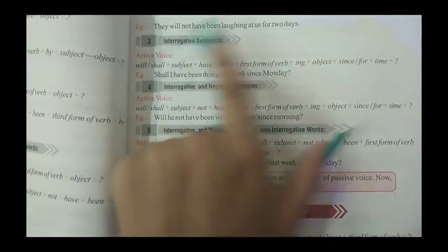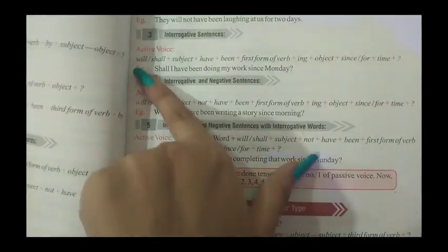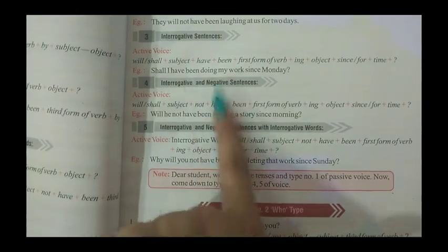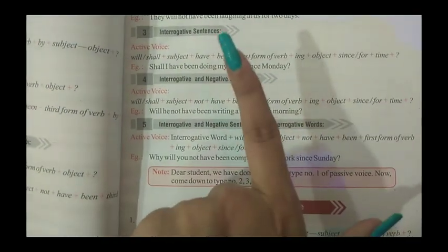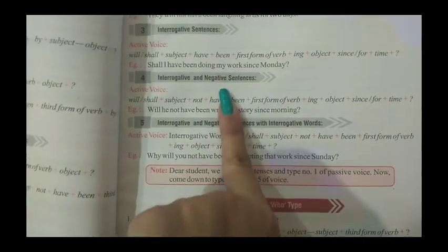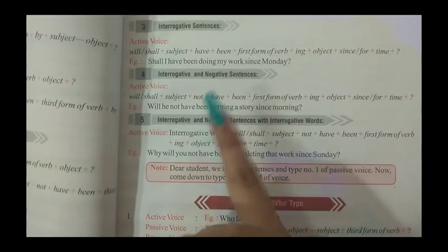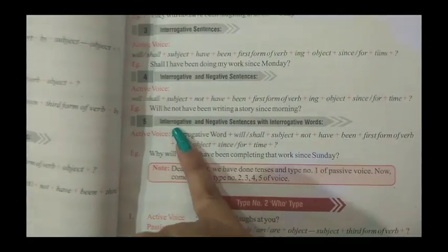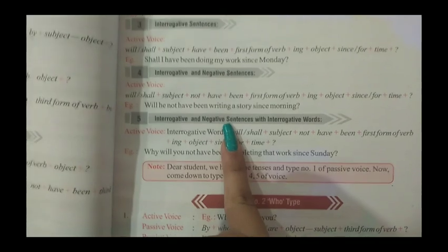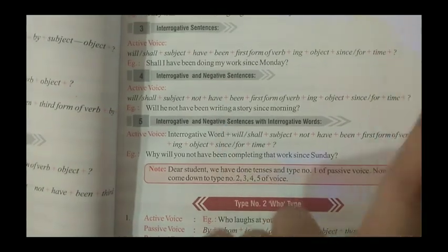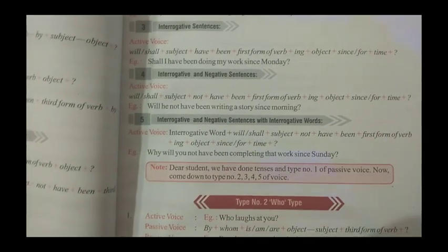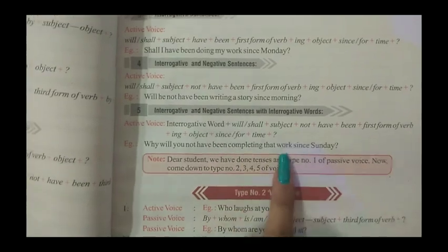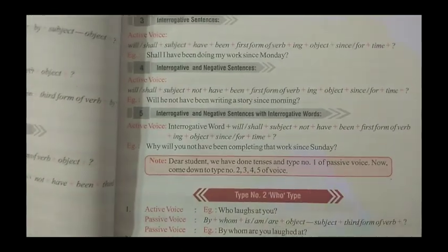For the interrogative form, will/shall comes first. In interrogative negative, 'not' is added. For interrogative word questions, the question word comes first. For example: 'Why will you not have been completing that work since Sunday?'